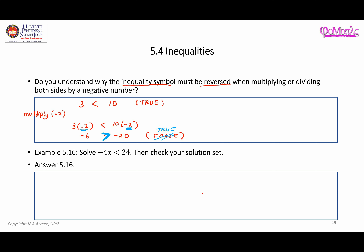Now solve negative 4x less than 24. To solve it, divide both sides of the inequality by negative 4. Negative 4x divided by negative 4, and 24 divided by negative 4. Since you divide by a negative number, the inequality symbol must be reversed. The solution is x greater than negative 6. You can check your solution and verify that this is true.